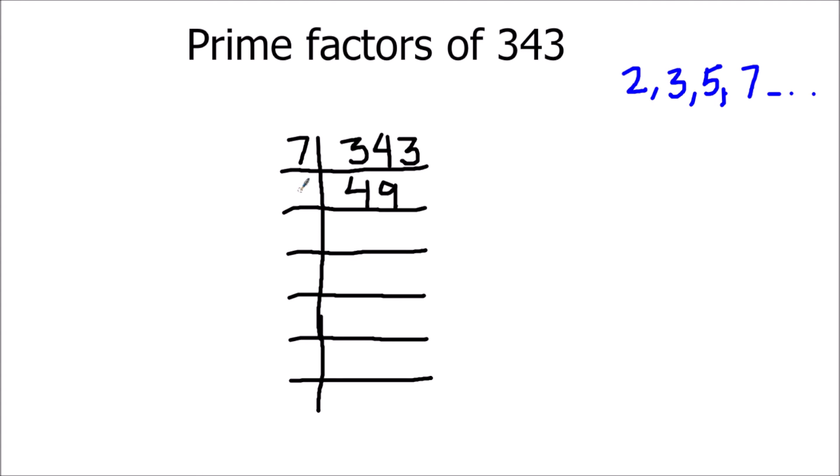Now 49 is also divisible by number 7. 7 times 7 is 49 and 7 times 1 is 7. So the number is fully divided and we got the prime factors of 343 as 7 times 7 times 7.